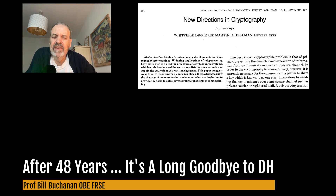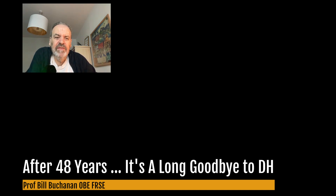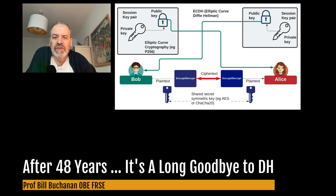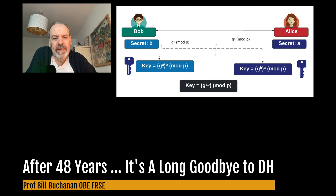After nearly five decades — 48 years to be precise — the Diffie-Hellman method has done so well in protecting citizen data and is used in virtually every connection that we make to the internet. Bob and Alice can create session key pairs, a public key and a private key, and then pass their public values and end up with the same shared key. The original paper was based on discrete logarithms, where Bob and Alice agree on a base generator G and a large prime number P.